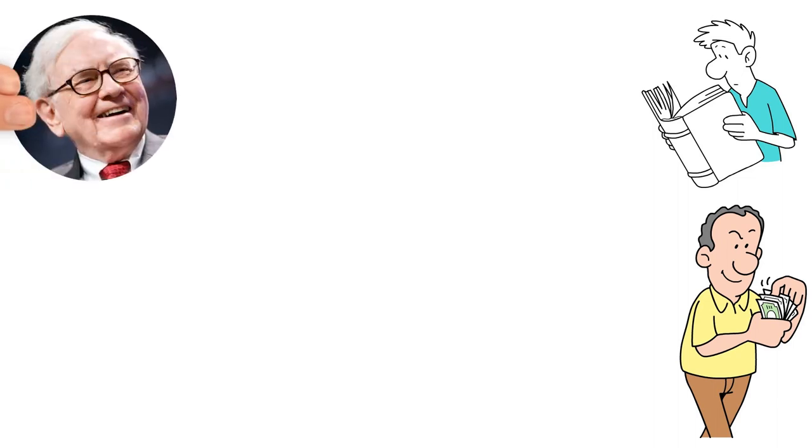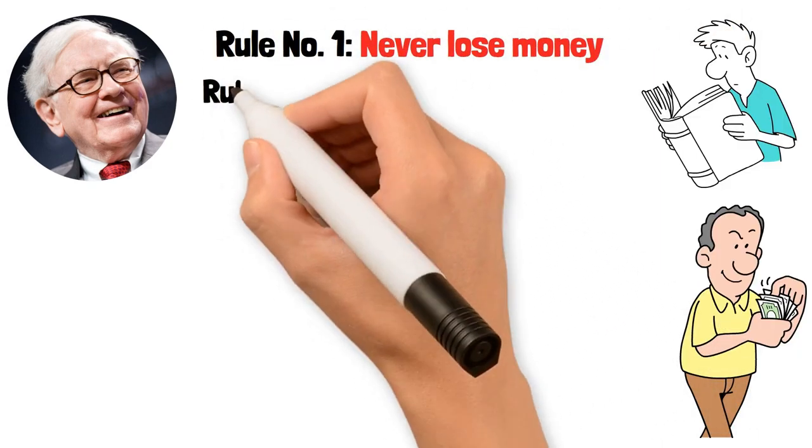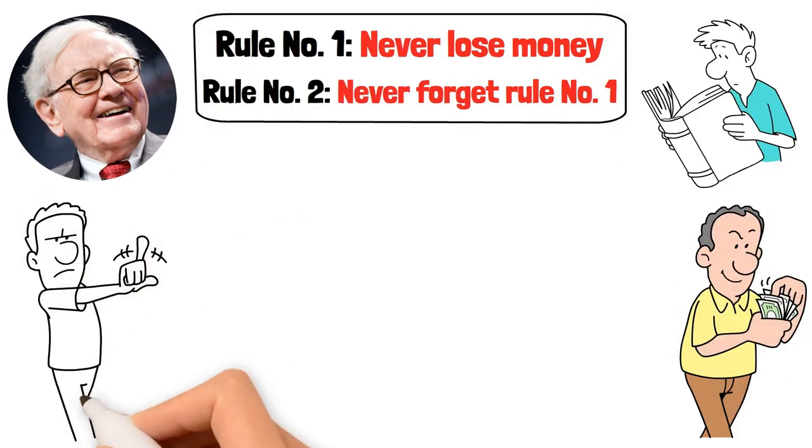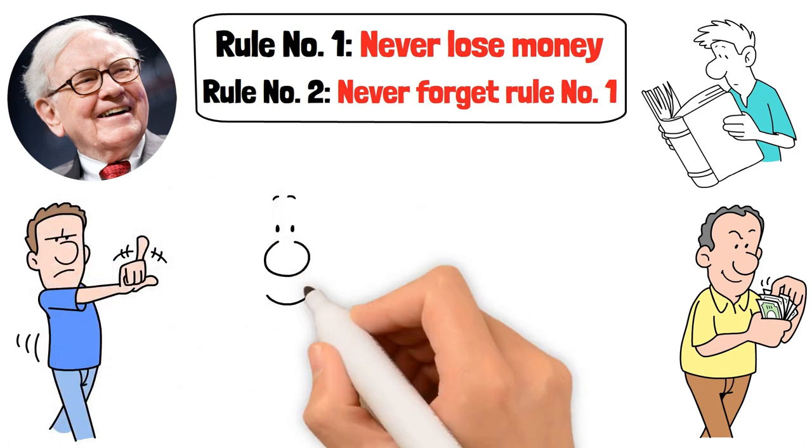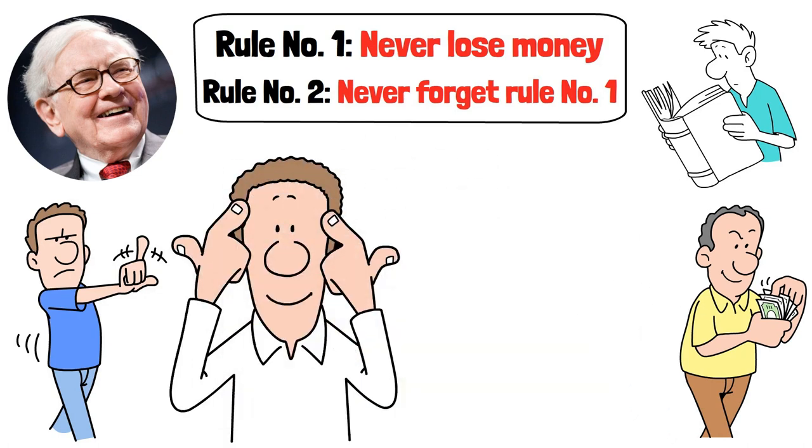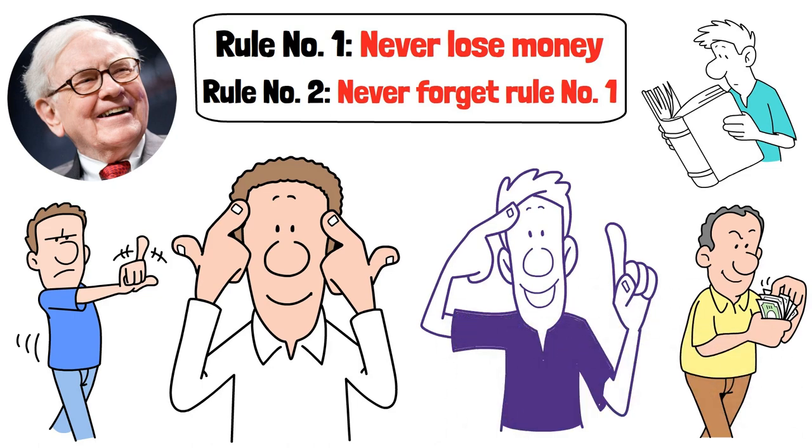There are two major rules that guide Buffett's investing. Rule number one, never lose money. And rule number two, never forget rule number one. Sounds straightforward, right? But there's depth to it. It's not about never making a loss. Even Buffett has faced setbacks. It's about the mindset of minimizing risk and avoiding unnecessary losses. It's about being cautious and not gambling away your future on a hunch.